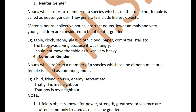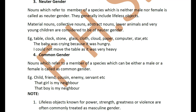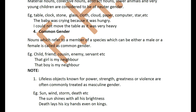Common gender: nouns which refer to a member of a species which can be either male or female is called common gender. Examples: child, friend, cousin, enemy, servant, etc. 'That girl is my neighbor' — 'that boy is my neighbor.' It could be a boy, a girl, an uncle, a friend, an aunt — you don't know. It could be of any of the masculine or feminine.